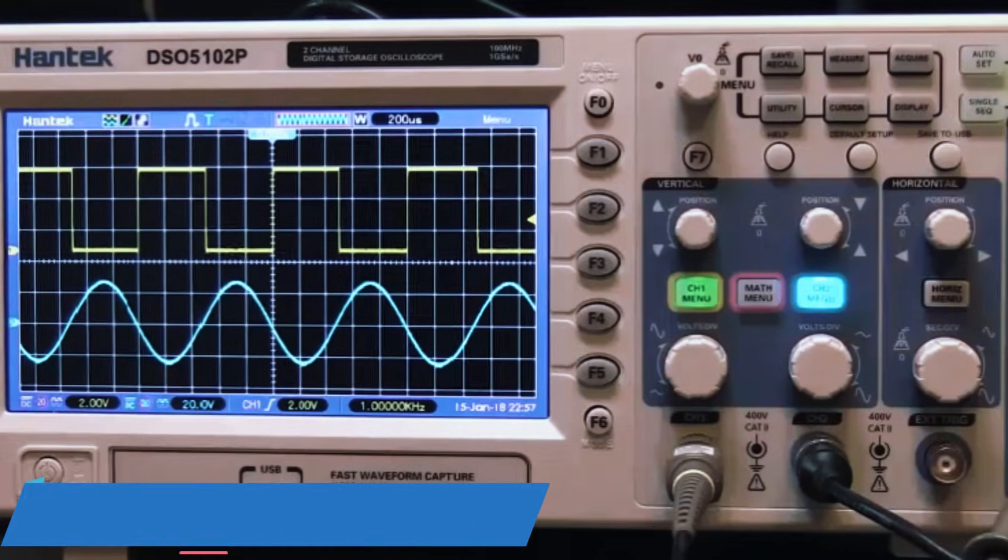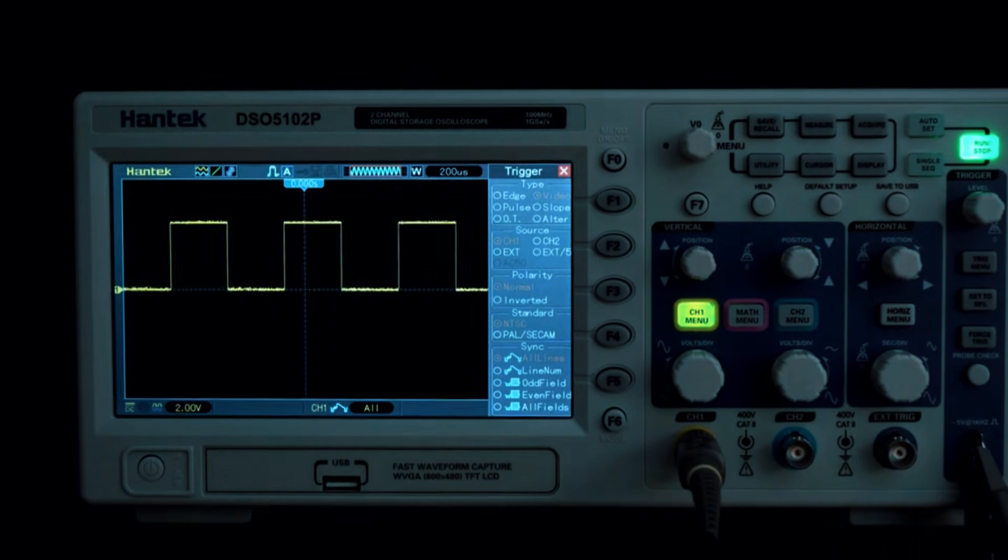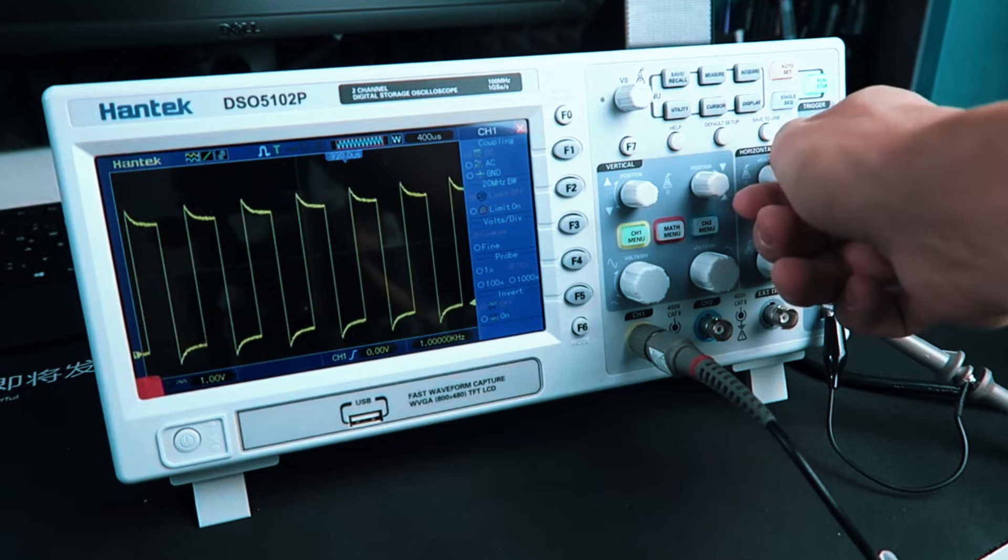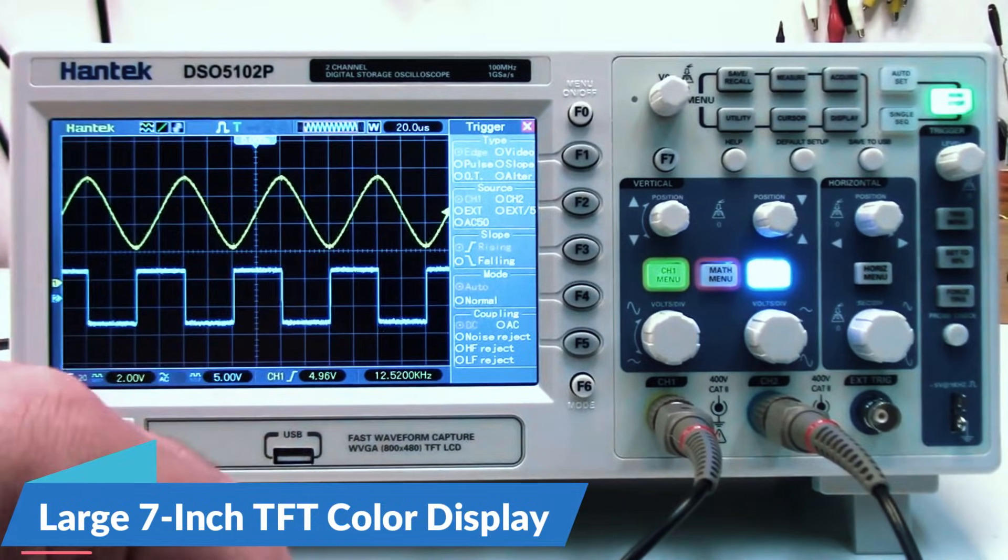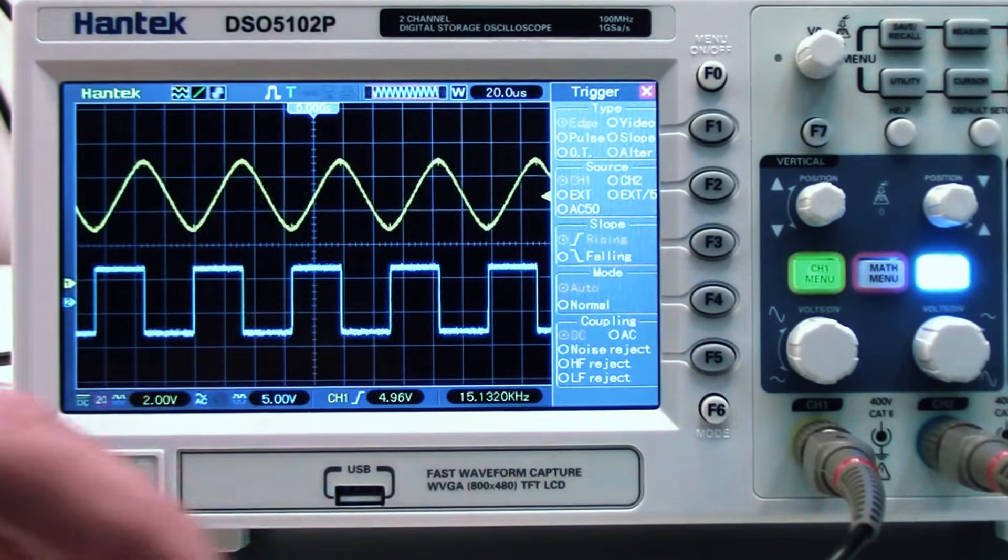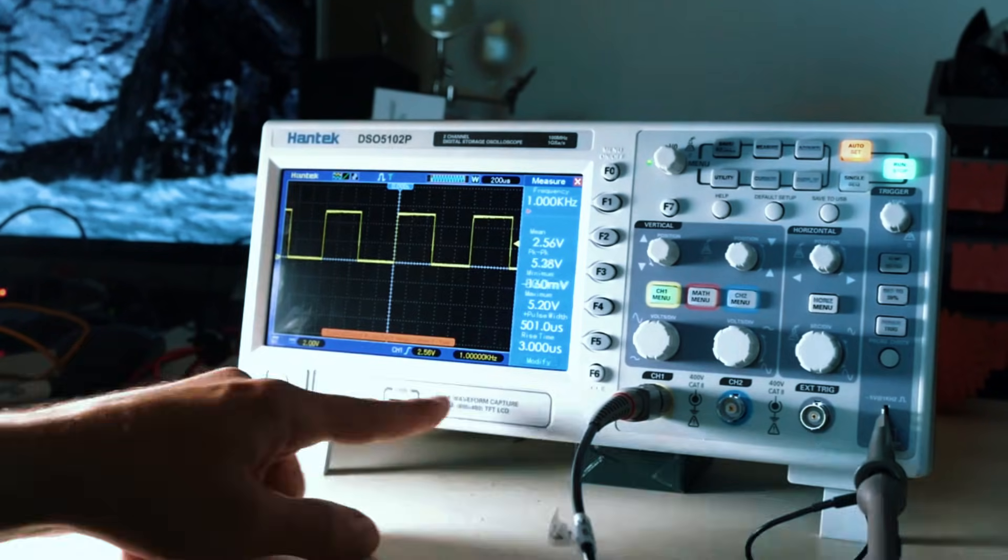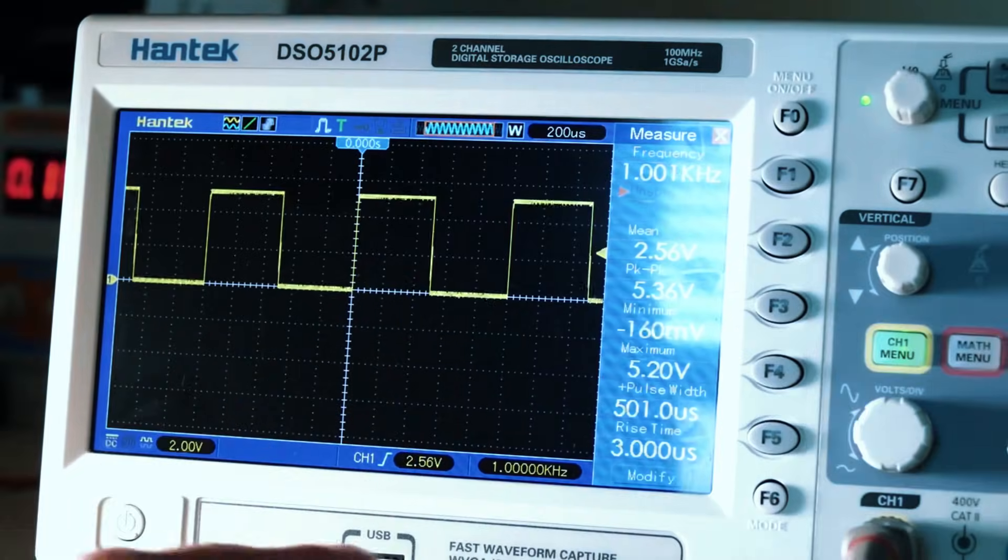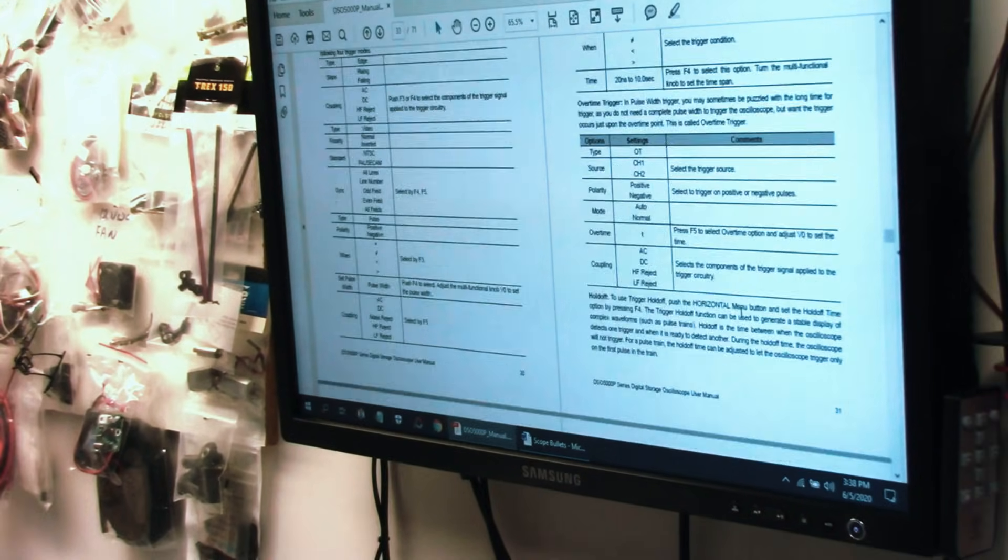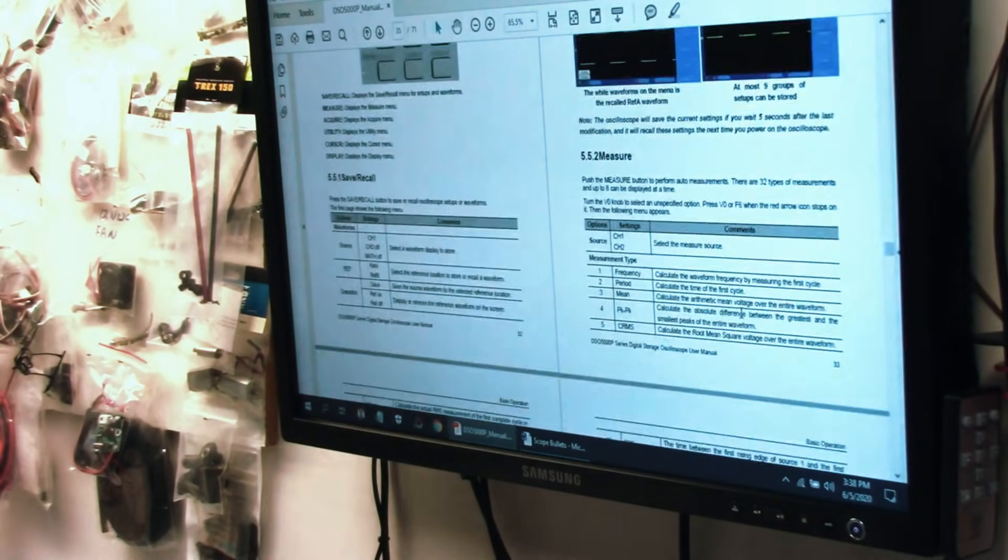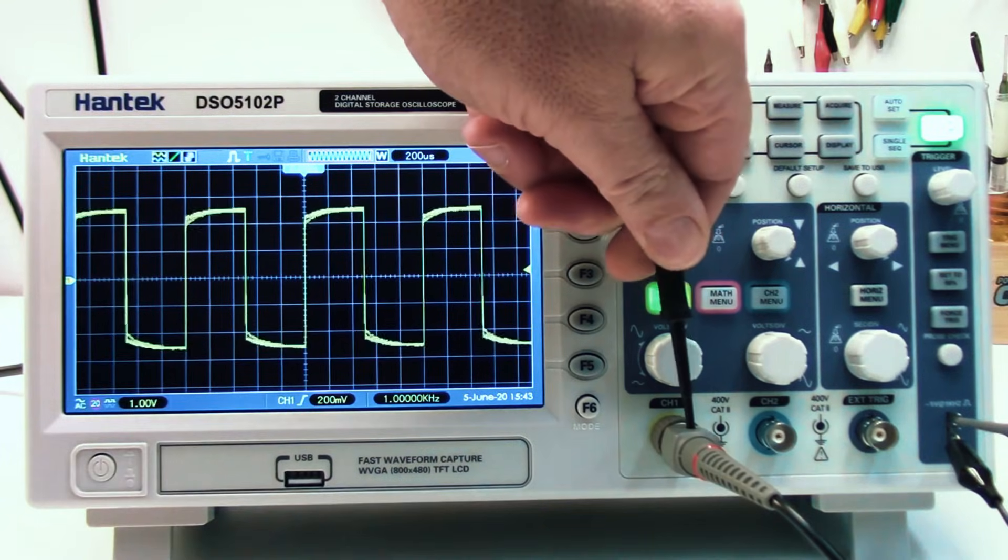The 100MHz bandwidth and 1 giga samples per second real-time sampling rate provide accurate and detailed waveform capture, making it ideal for analyzing high-frequency signals. One of its standout features is the large 7-inch TFT color display which offers clear visibility and easy waveform analysis, a must-have for professionals and students working with complex circuits. Connectivity is another strong point. The USB interface allows you to export data to a PC for further analysis, making it easy to store, compare, and document your signal tests.